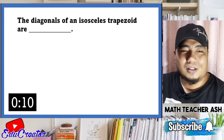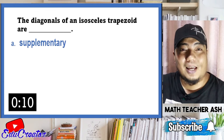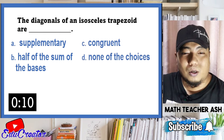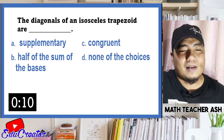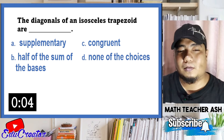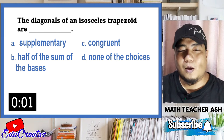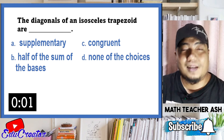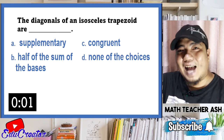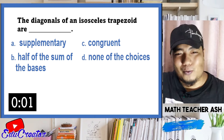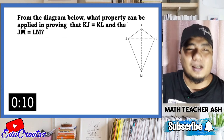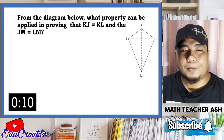Question: the diagonals of an isosceles trapezoid are — is it A supplementary, B half the sum of the bases, C congruent, or D none of the choices? As stated earlier, in an isosceles trapezoid the diagonals are congruent. The correct answer is letter C.